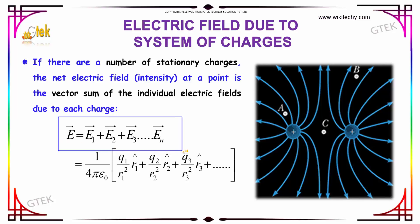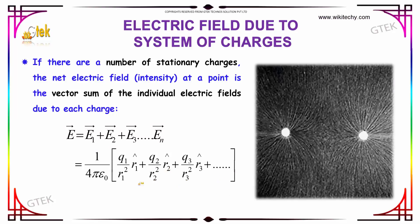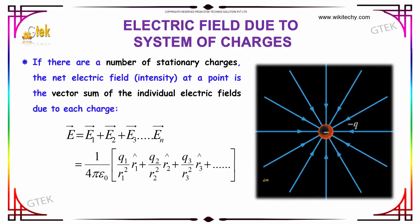We can express this as E vector equal to E1 vector plus E2 vector plus E3 vector, and so on till N. By substituting, we get 1 divided by 4 pi epsilon 0 into Q1 divided by R1 square into R1 cap, plus Q2 divided by R2 square into R2 cap, and it goes on. This defines and explains the electric field due to the system of charges.